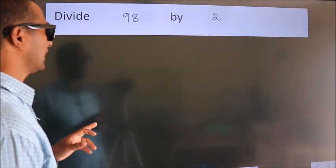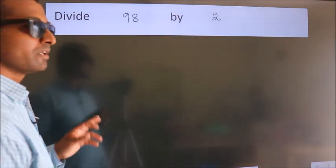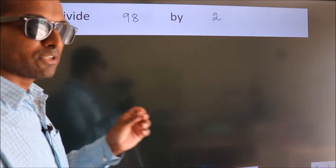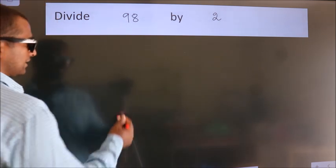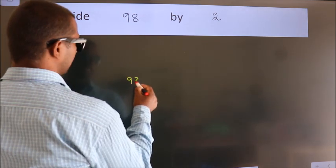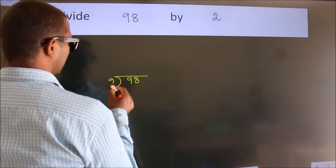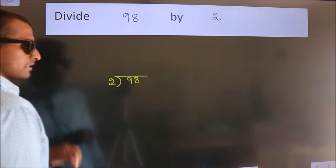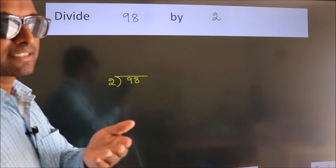Divide 98 by 2. To do this division, we should frame it in this way: 98 here, 2 here. This is your step 1.